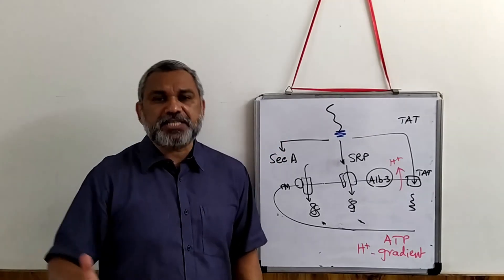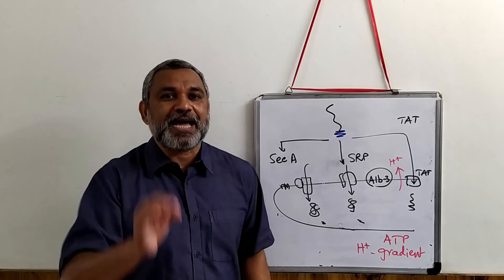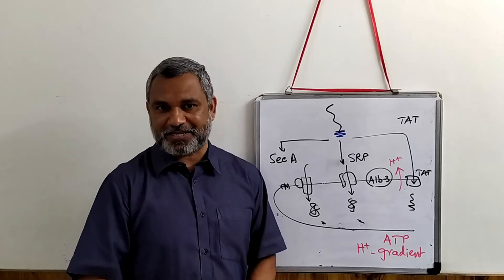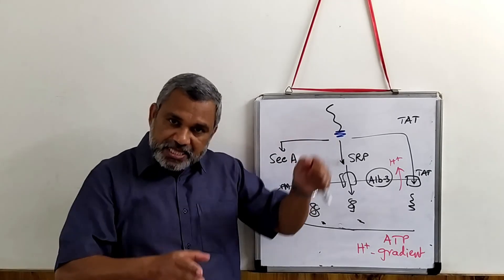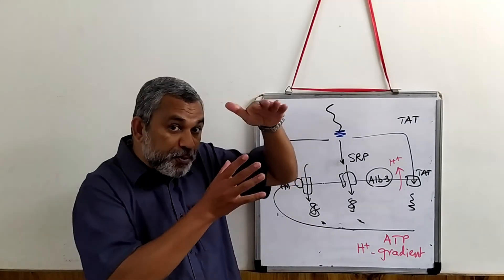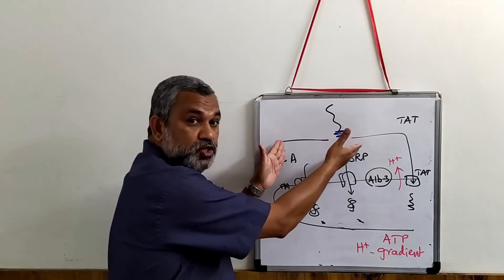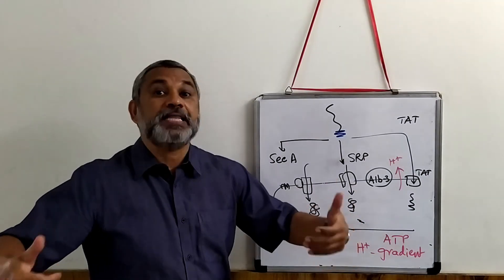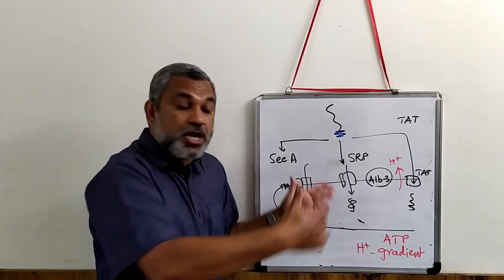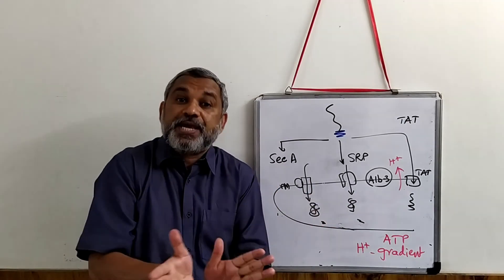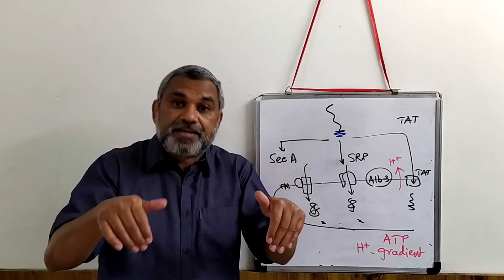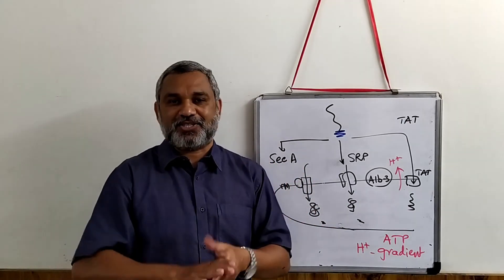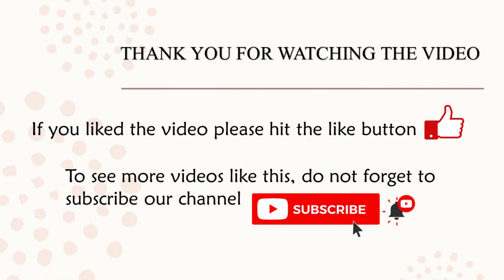These are the three ways by which proteins meant for the thylakoid are translocated. In this video, we have seen how proteins are translocated into the stromal side, and the elaborate mechanisms proposed for the translocation of proteins to the thylakoid — whether getting embedded or integrated into the membrane structure.